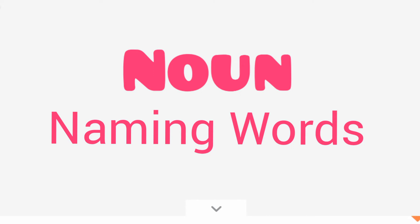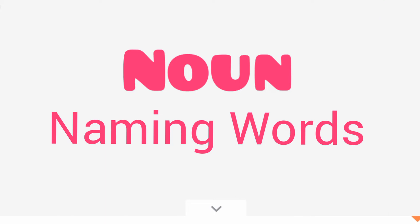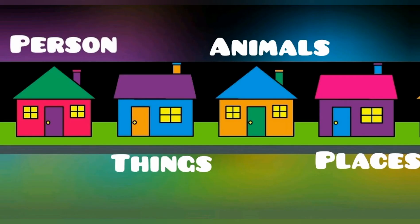In my last video I explained naming words, and this is the connectivity of that video. If you didn't watch that video, I have given the link in info. First you have to watch that video. In that video I discussed all the vocab — the person, animals, things and places — what they mean and what vocab they have.